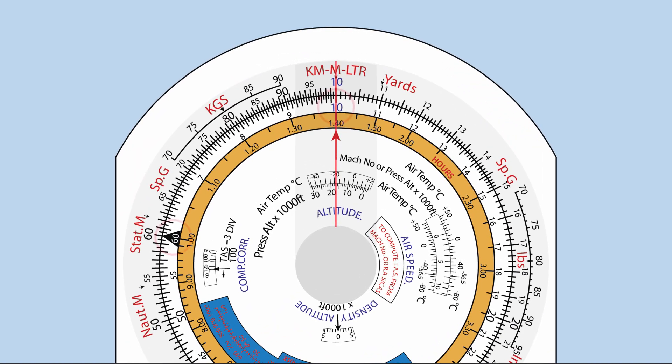There are two index marks on the inner scale. The first one, the blue number 10, is known as the 10 index. It is used for basic numerical calculations. The second one is the black triangle with the number 60, and it is known as the 60 index. It is used for calculations involving time, distance, and speeds.